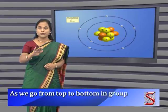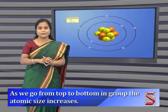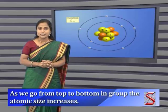What happens in a group? As we go from top to bottom in a group, the atomic size increases, resulting in a decrease of the effective nuclear charge. This causes the attractive power of the nucleus on the outermost electron to be lesser, making it easier to remove electrons from the outermost shell. Therefore, ionization energy decreases as we move down a group.